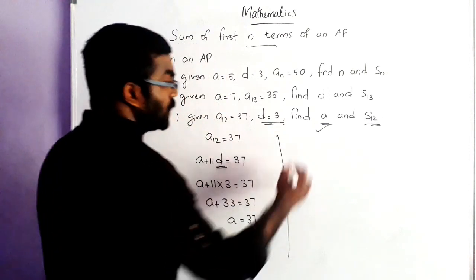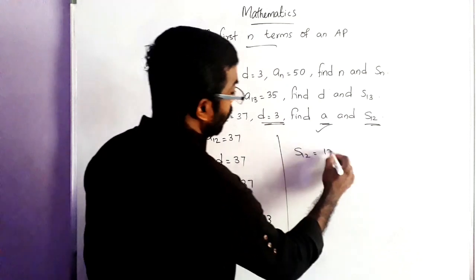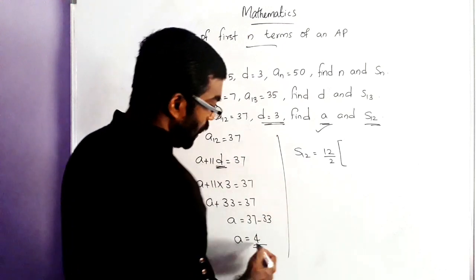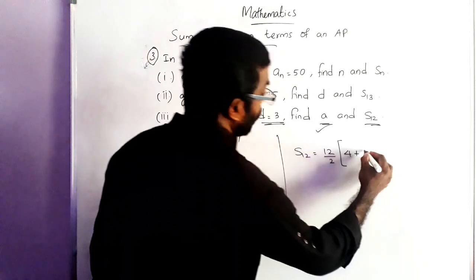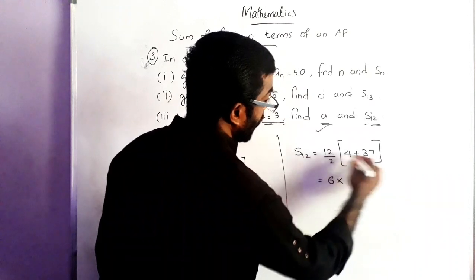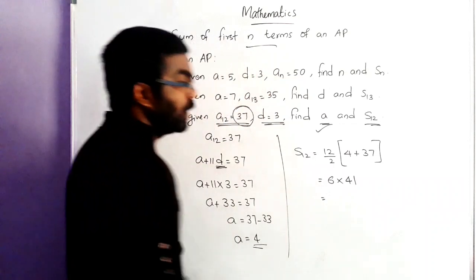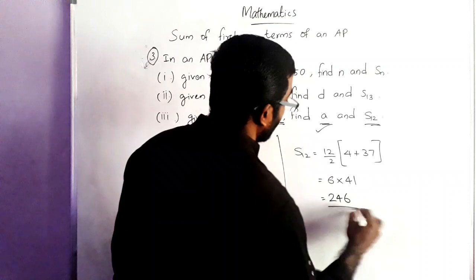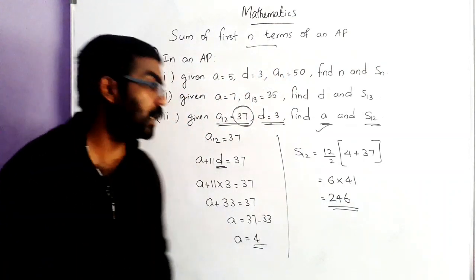Now S12. S12 is equal to N by 2, here N is 12, so 12 by 2 into A plus AN. A is 4 and AN here means A12, that is 37. So 4 plus 37. Then 12 by 2 is 6 into 37 plus 4, which is 41. And 41 into 6 is 246. The sum of 12 terms, S12 is equal to 246.